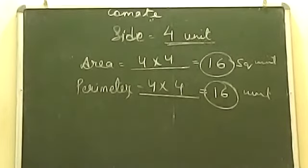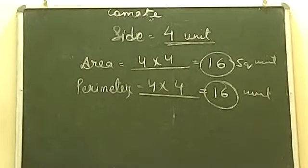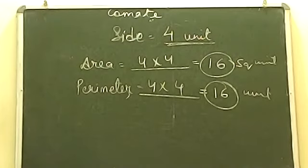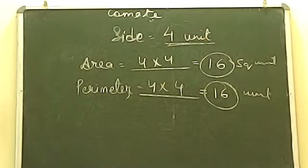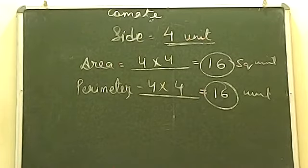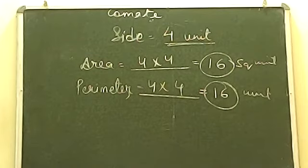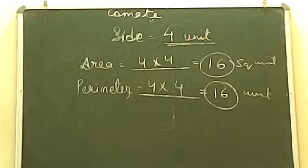Next question: the cost of fencing a rectangular field at 30 rupees per meter is 2400 rupees. The length is 24 meters. Find the breadth.